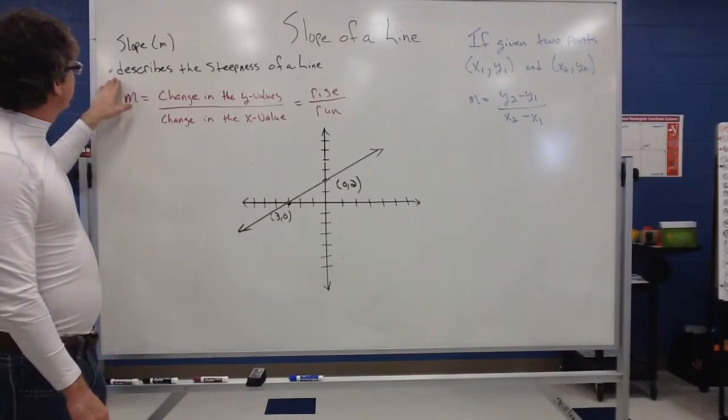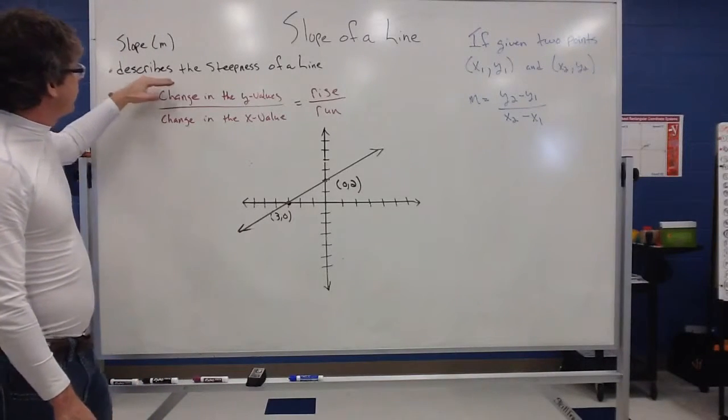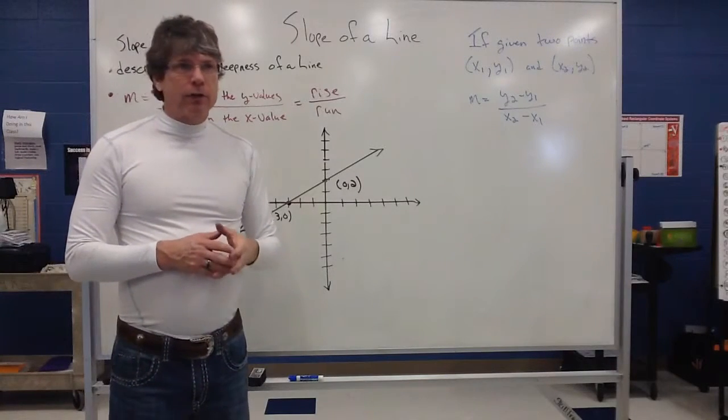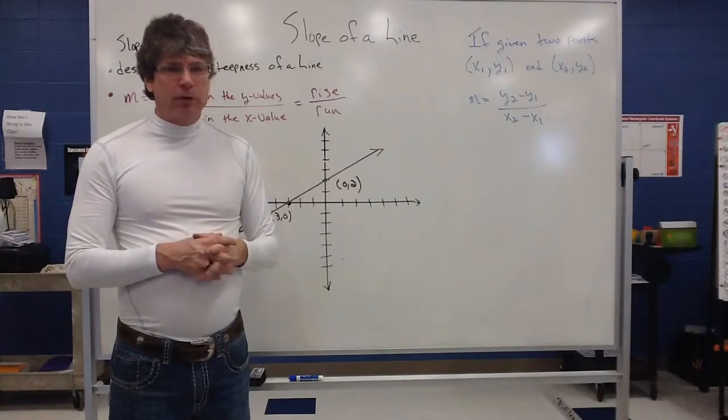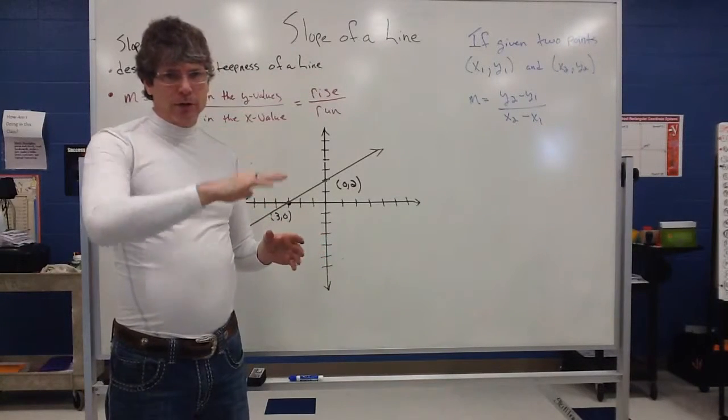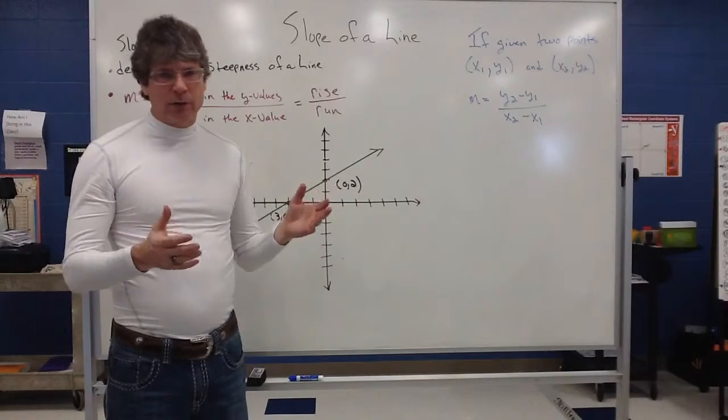A definition of slope is it basically describes the steepness of a line. For us, a lot of times we think about steepness, like a hill. A hill has a steepness or a mountainside has a steepness if you talk about skiing.